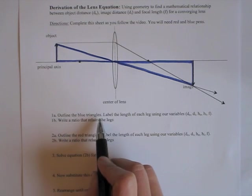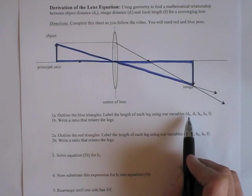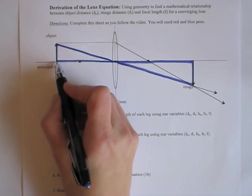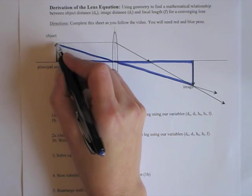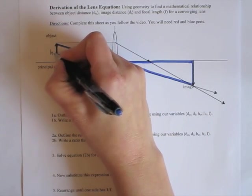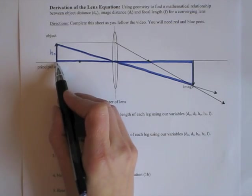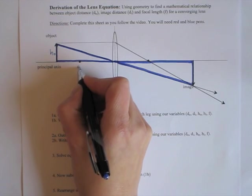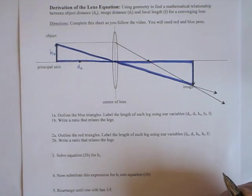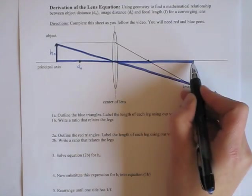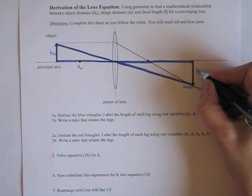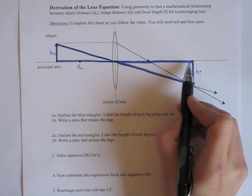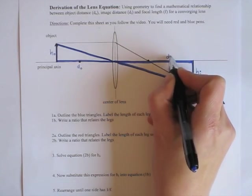Once you've done that, we're ready to label the length of each leg using our variables. Looking at these triangles, this leg here, the length of that would just be the object height, HO. And the length of this leg is just the distance from the lens to the object, the object distance DO. For this triangle, this distance here would be the image height. And this distance from the center of the lens to the image, that is DI, the image distance.